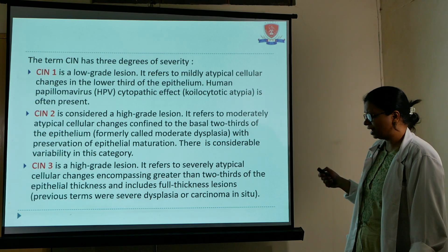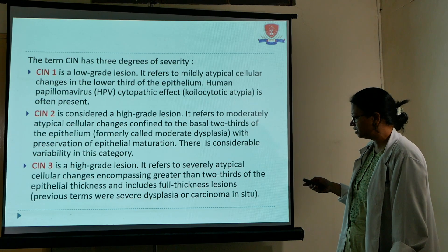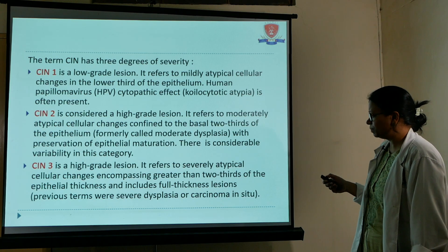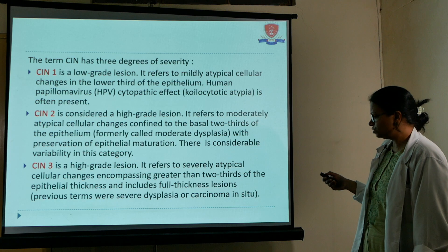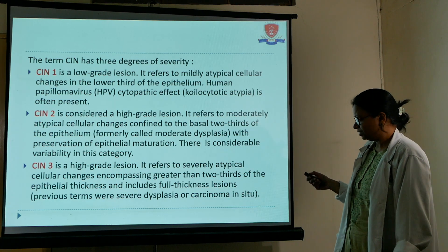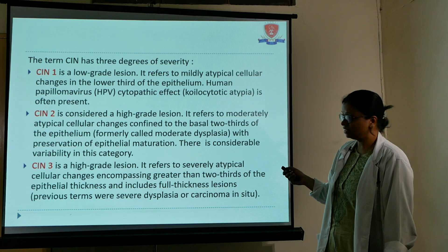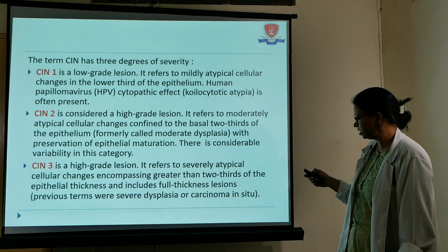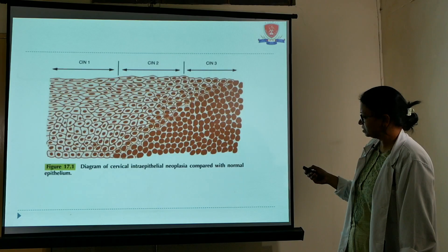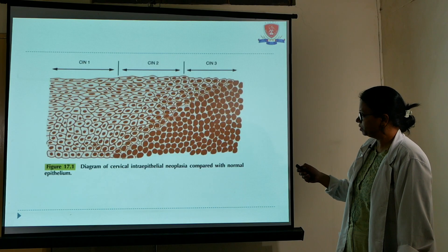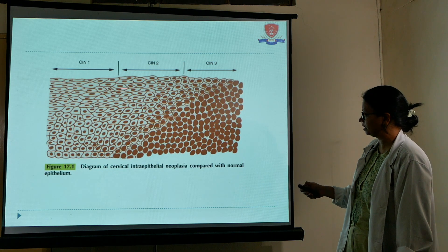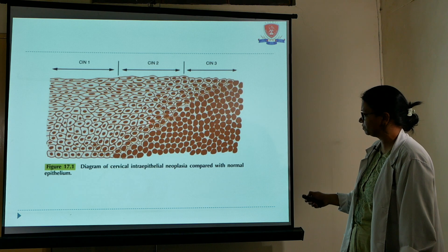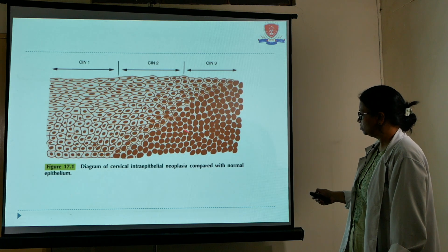CIN-3 is a high-grade lesion. It refers to severely atypical cellular changes encompassing greater than two thirds of the epithelial thickness and includes full-thickness lesions — hence the previous terms severe dysplasia or carcinoma in situ. In the picture, CIN-1 shows only one third of the layer affected, CIN-2 shows almost half affected, and CIN-3 involves the whole epithelium.